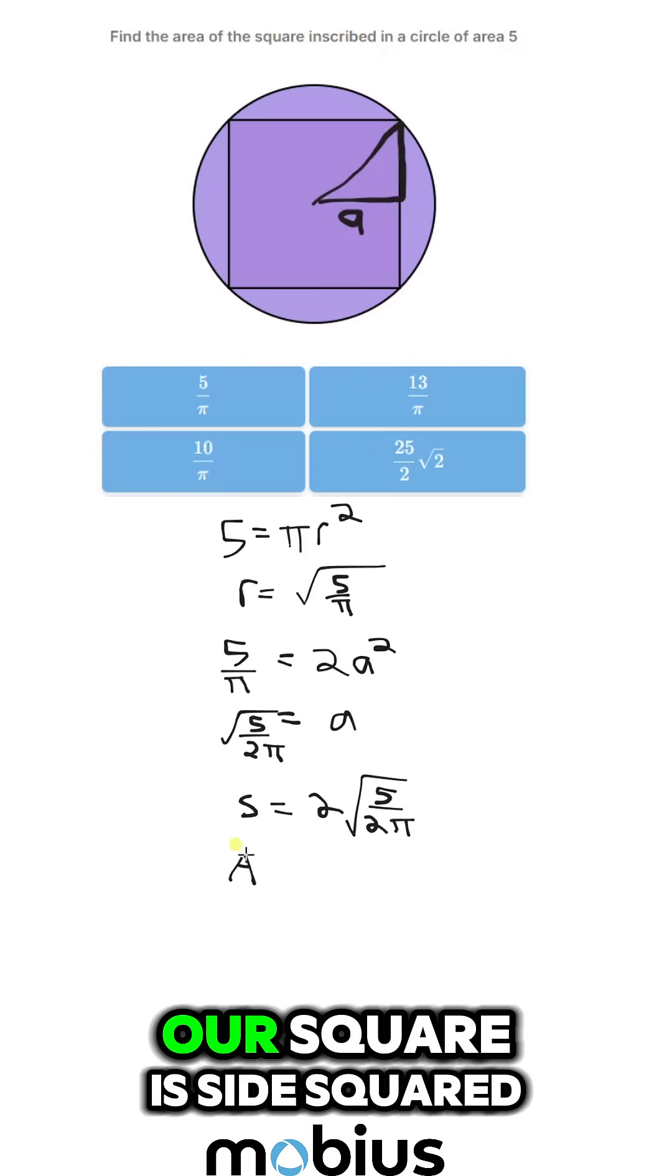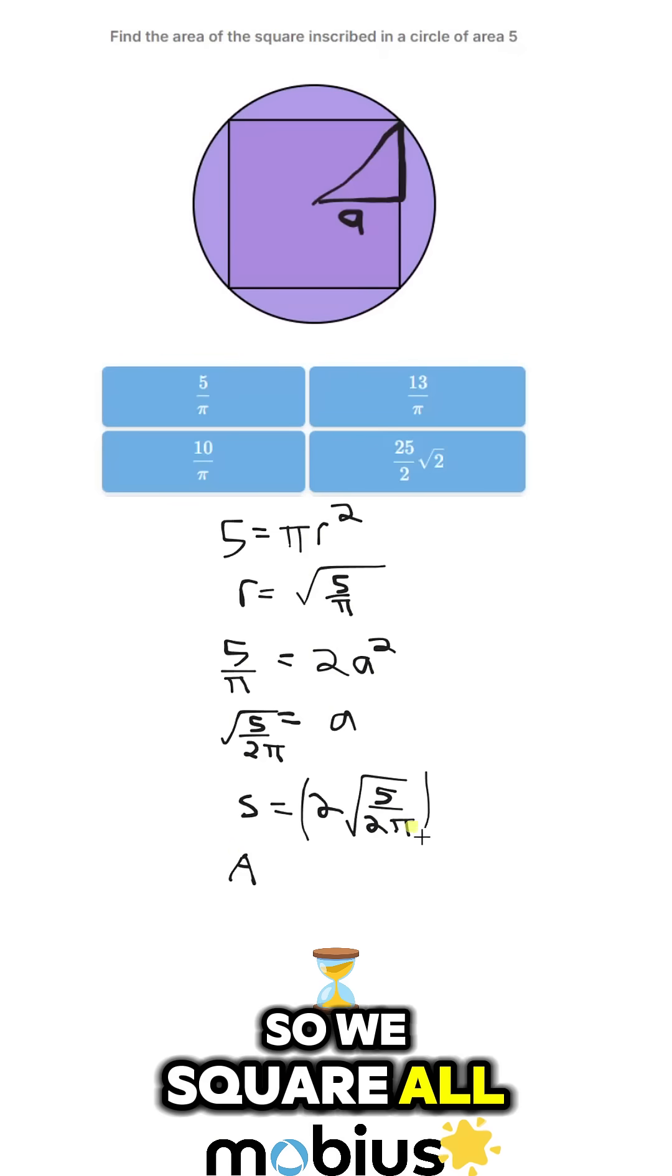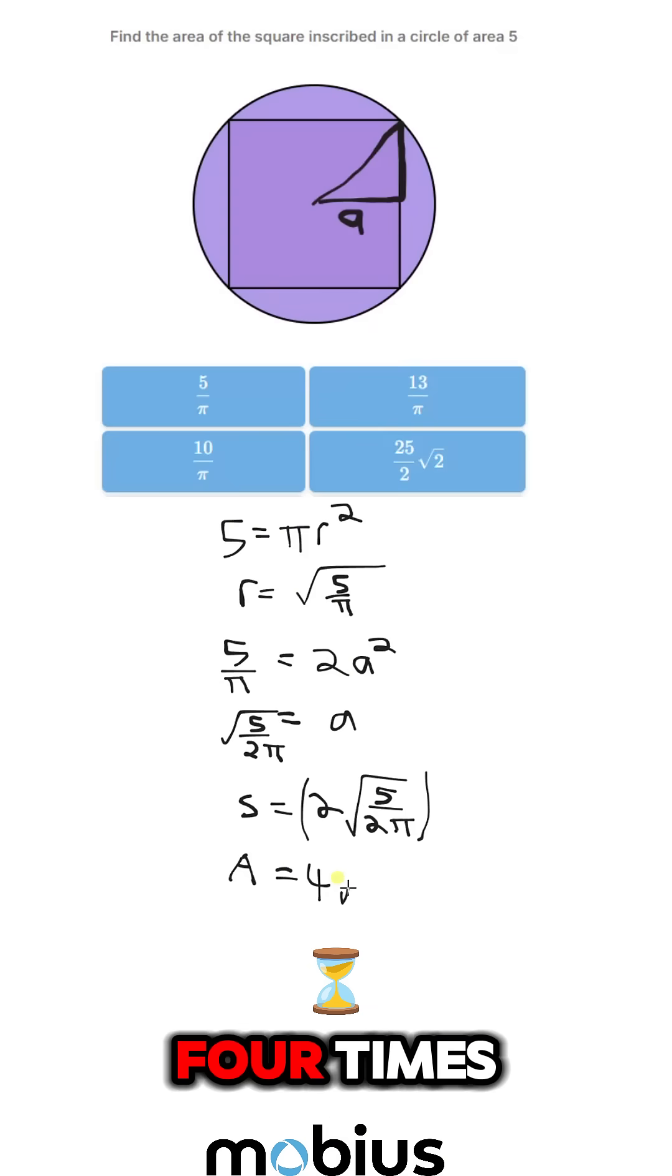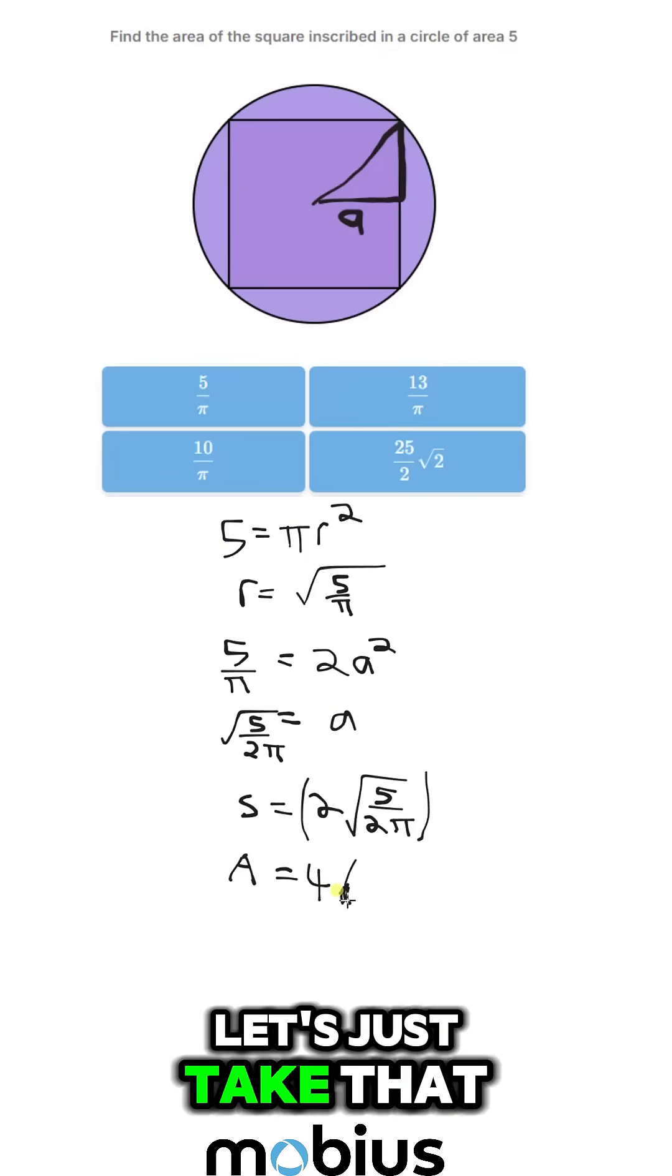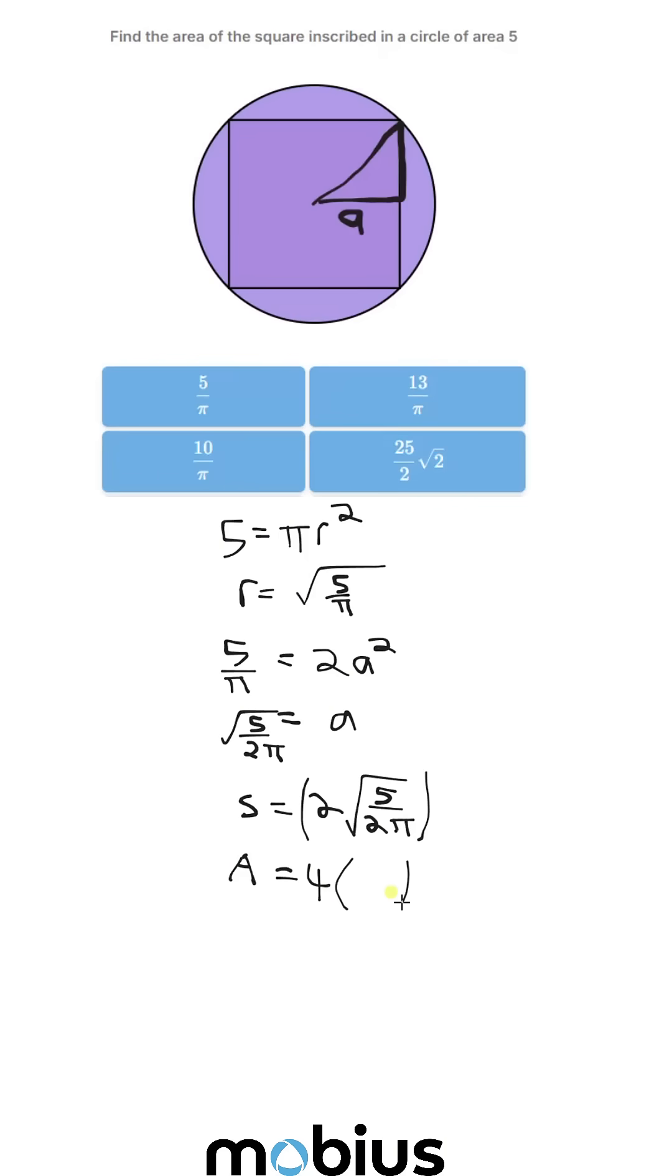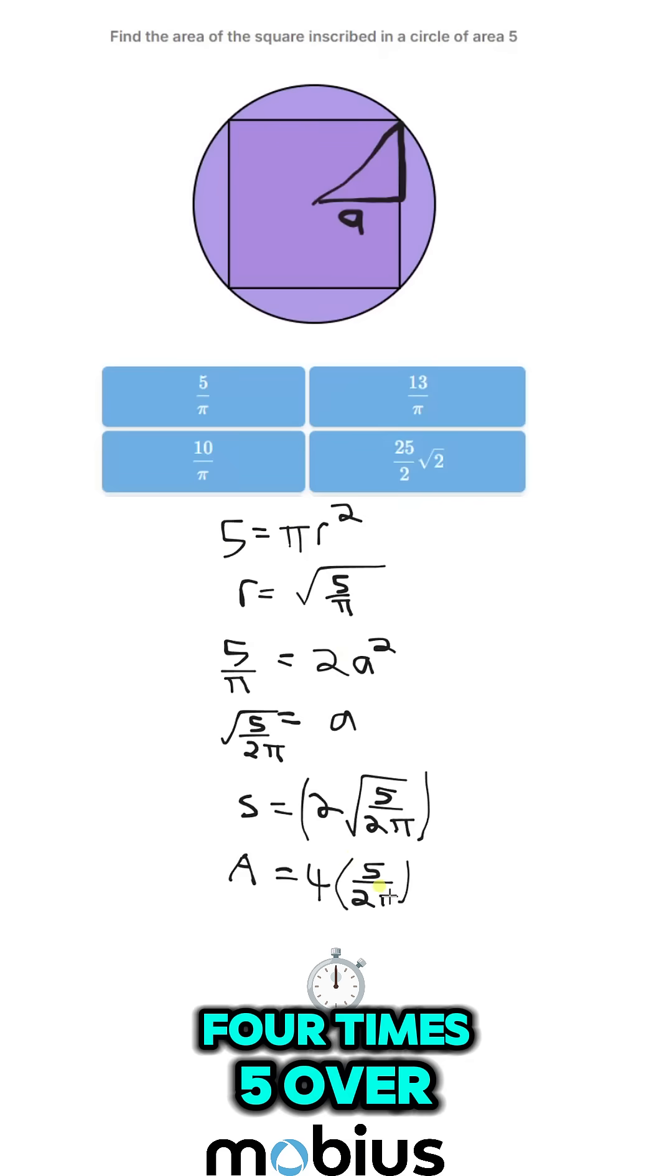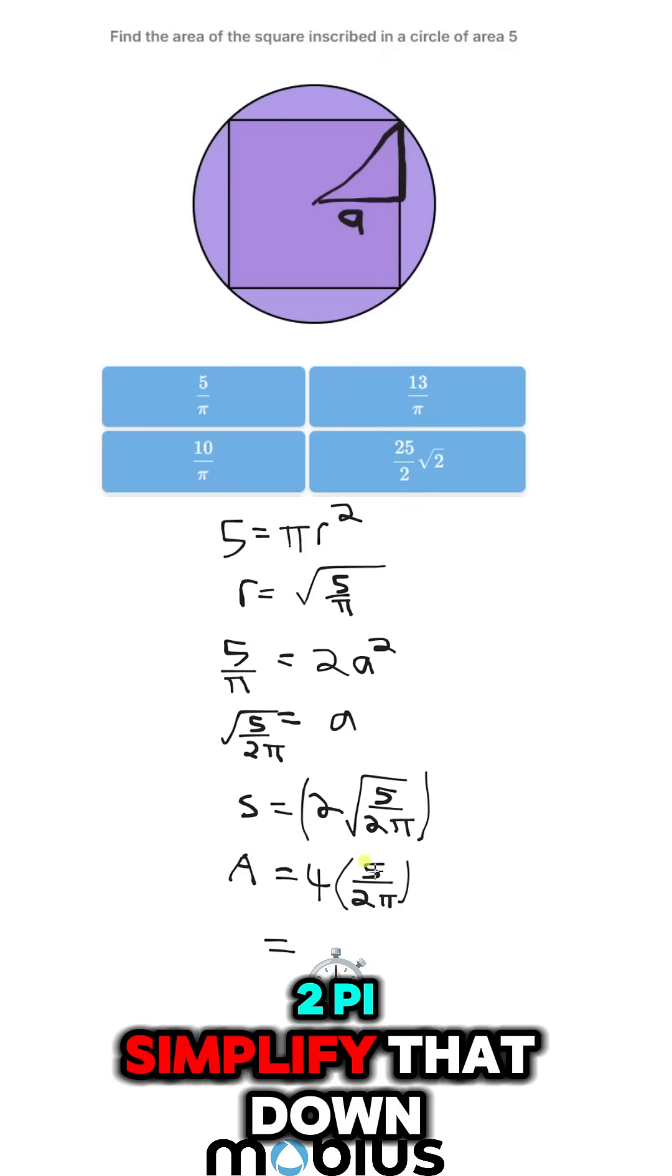And the area of our square is side squared. So we square all of this. And we get 4 times, let's just take that out of the squares, 4 times 5 over 2 pi.